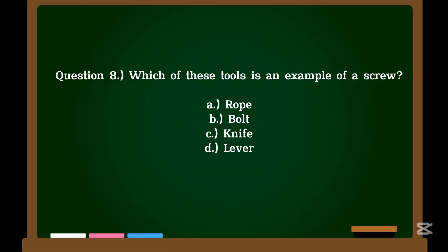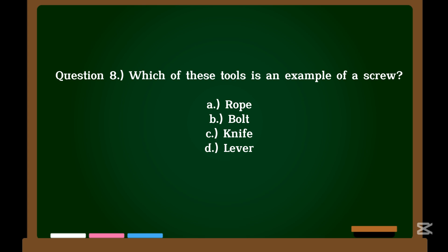Question 8. Which of these tools is an example of a screw? A. Rope. B. Bolt. C. Knife. D. Lever. Correct answer: B. Bolt.